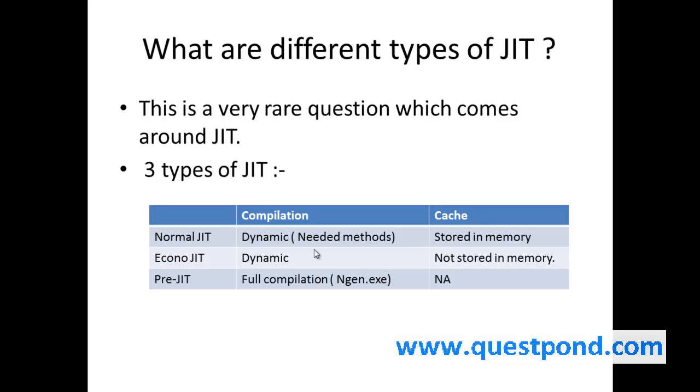In Normal JIT, the compilation is done on demand basis. For example, if you have method 1, then only method 1 will be compiled if it is needed. Once this method 1 is compiled, the compiled code is stored into cache, that is into RAM.